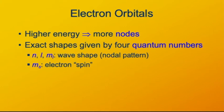The exact shapes of these standing electron waves in atoms are determined by four mathematical parameters, which we call quantum numbers. The first three, n, l, and m_l tell us what the shape of this standing wave is going to be. n tells how many nodes there are.